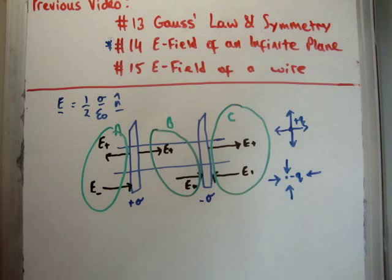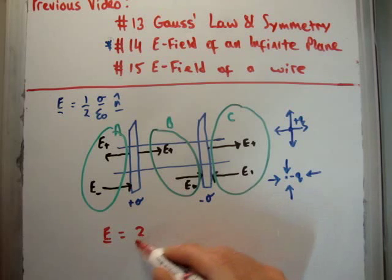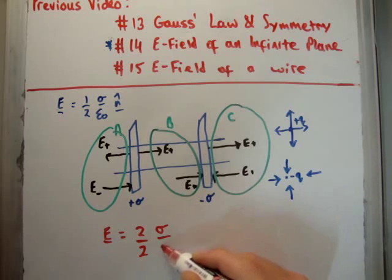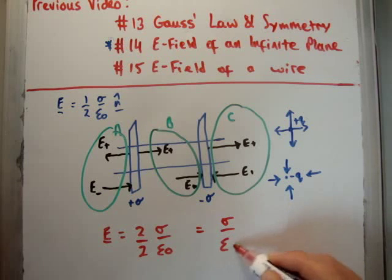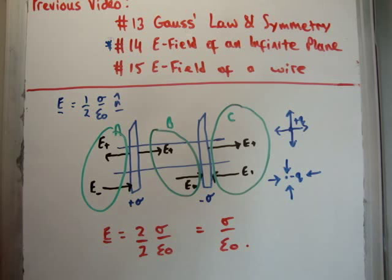So in region B, what we're going to actually have is E is equal to twice half sigma over epsilon zero. Okay, or it's going to be sigma over epsilon zero. So that tells us that the electric field, due to a parallel plate capacitor, is simply sigma over epsilon zero.